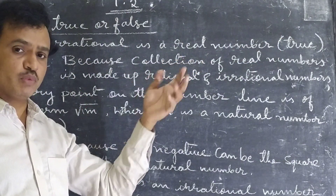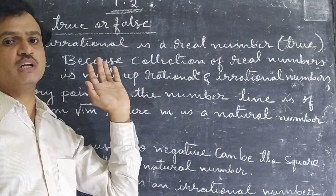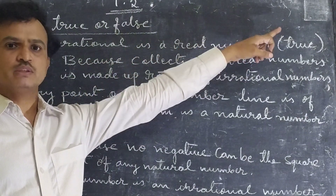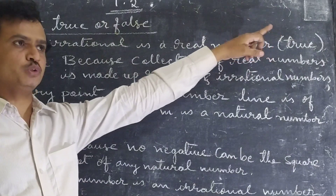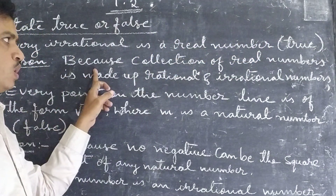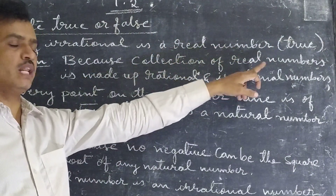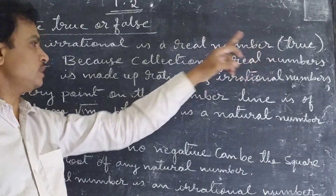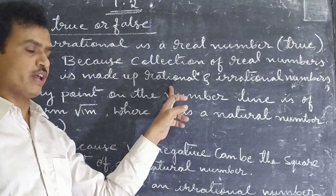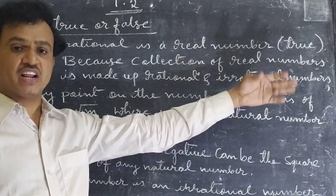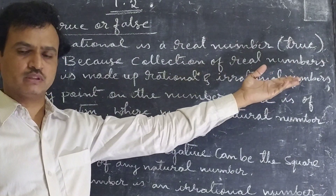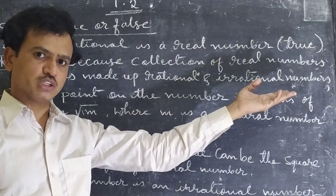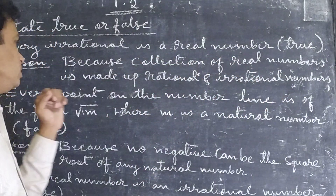In real numbers, it includes all irrational numbers. So every irrational is a real number — it is true. The reason is because the collection of real numbers is made up of rational and irrational numbers. In real numbers, it will become rational as well as irrational numbers.